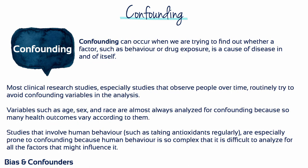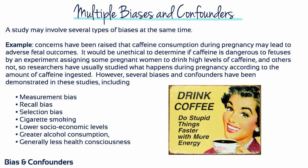Most clinical research studies, especially studies that observe people over time, routinely try to avoid confounding variables in the analysis. Variables such as age, sex and race are almost always analysed for confounding, because so many health outcomes vary according to them. Studies that involve human behaviour, such as taking antioxidants regularly, are especially prone to confounding, because human behaviour is so complex that it's difficult to analyse for all the factors that might influence it.